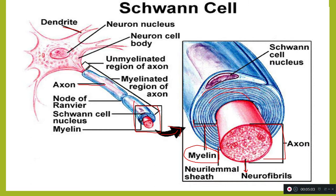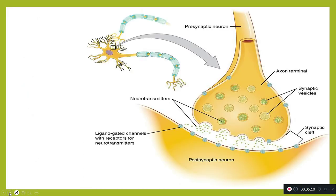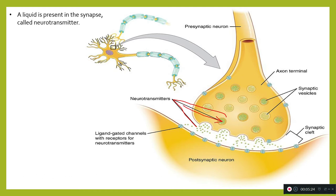Now looking at a diagram of nerve impulses: a liquid is present in the synapse called neurotransmitters. Nerve impulses are transmitted from one neuron to another by crossing the synapse through these neurotransmitters. Nerve impulses travel in one direction only.